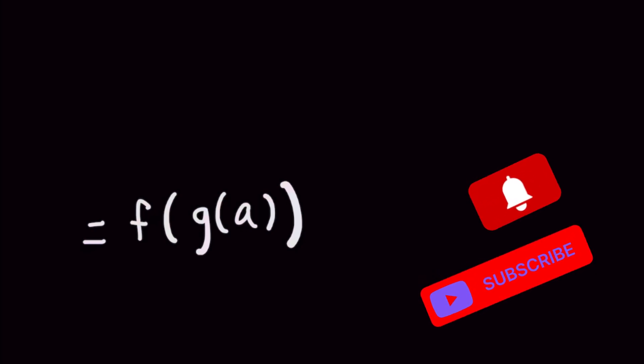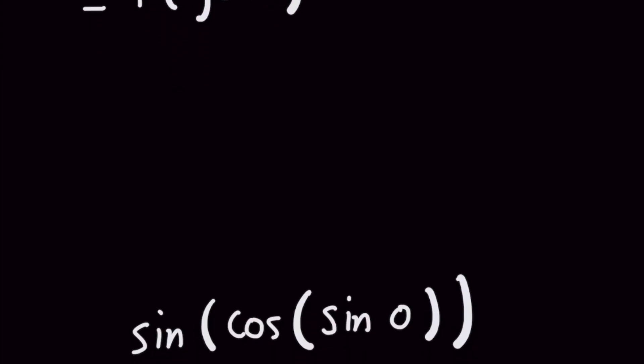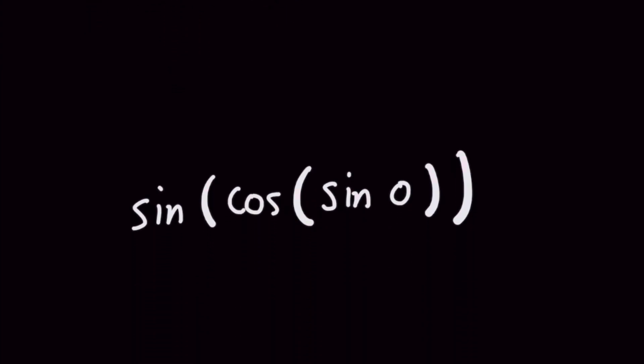So with that being said if we want to call the original problem sine of cosine of sine of x the same as f of g of h of x then that's basically going to be f of g of h of 0 to figure out how to solve the problem. Pretty nifty huh?